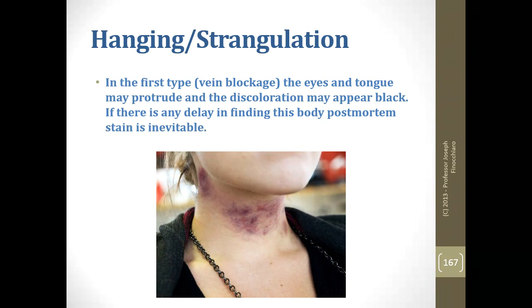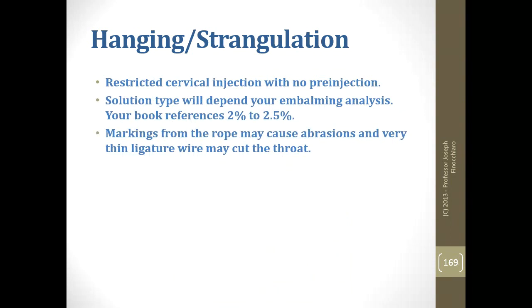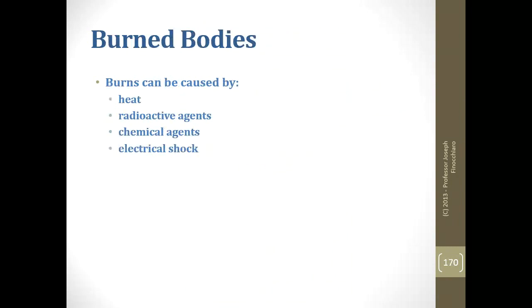In the first type — everything goes in but nothing comes out — the eyes and tongue may swell; any delay in finding the body makes post-mortem stain almost certain. Simply relieving the pressure will help with some stain and swelling. In Florida, suicides go to the medical examiner, which helps relieve the pressure immediately. Use restricted cervical with no pre-injection; solution type depends on analysis — around 2% to 2.5%, only slightly higher than normal. Rope markings may cause abrasions, so be careful when restoring and ensure appropriate clothing is brought to hide them.